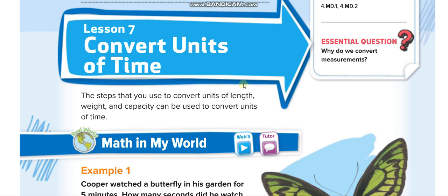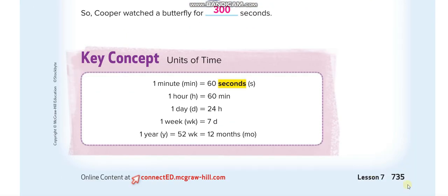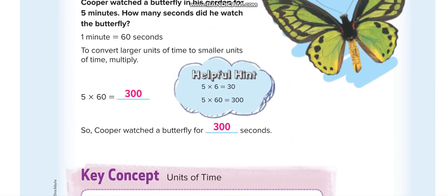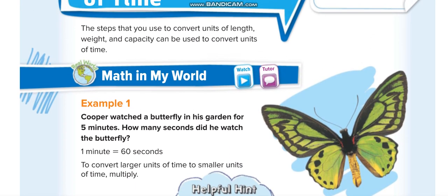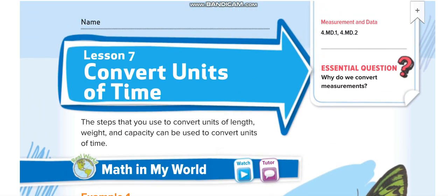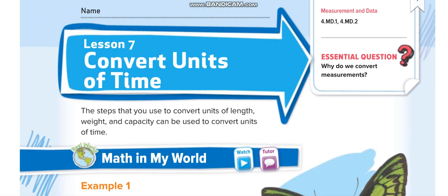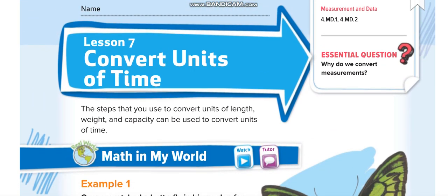Hello everyone, welcome back to another video lesson. Today's lesson is for Grade 4, Chapter 11, Lesson 7: Convert Units of Time. The page number is 735. Before starting today's lesson, don't forget to subscribe to my channel, Learn Math with Mr. Saad, and also press the bell icon to get notified for every new video.